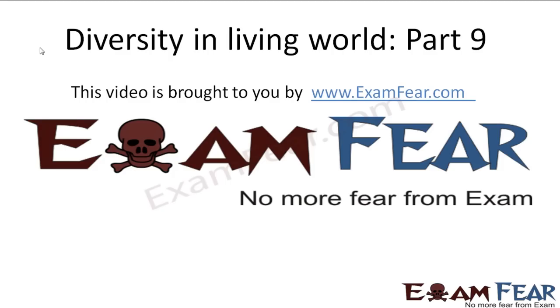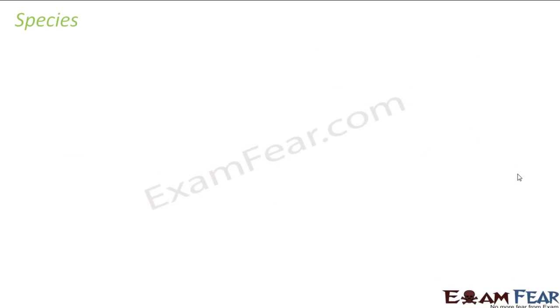Hello friends, this video on diversity in living world part 9 is brought to you by ExamFear.com. With this idea about the taxonomic categories, we are going to discuss each taxonomic category in detail. We will start with the lowermost level, that is species, and gradually talk about all seven taxonomic categories. It is very important to understand this concept of taxonomy because only then you will understand the basics of nomenclature — how you name organisms.